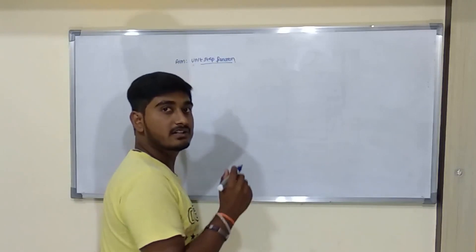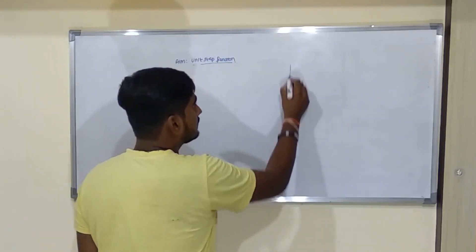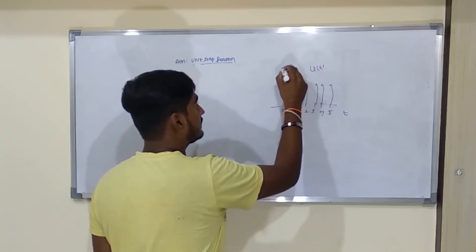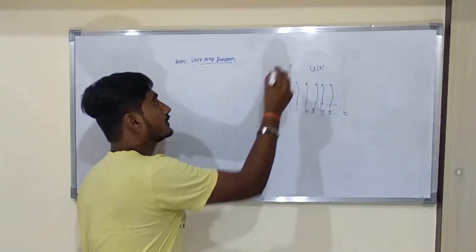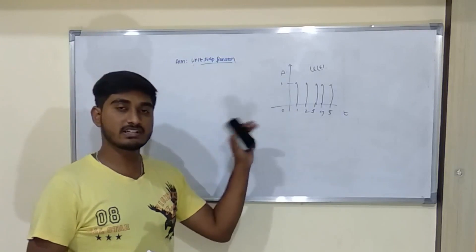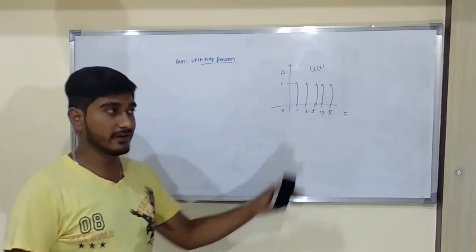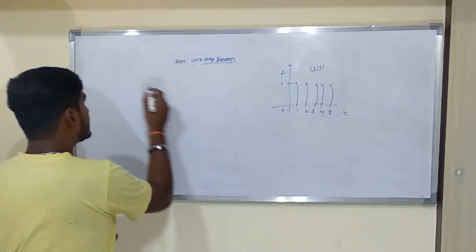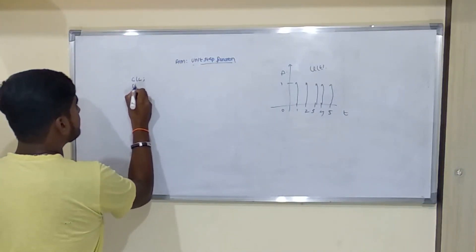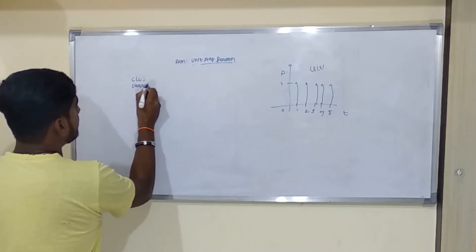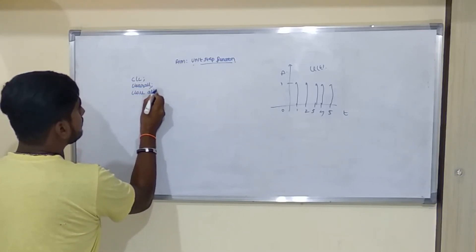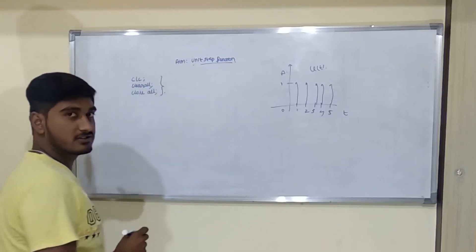So I will take a consideration of example graph. So this is an example unit step function I have considered for this video. Let me visualize this in MATLAB. So first the coding starts like this, you see, clear all, close all.